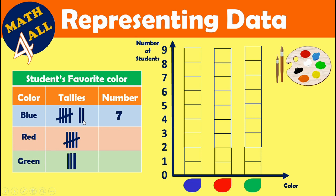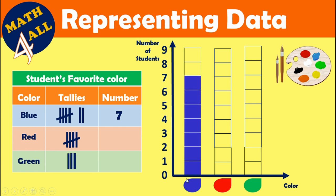Write seven in the number column, then shade seven squares on the graph. That means blue is the favorite color for seven students. For red, we have a set of five, so write five and shade five squares.